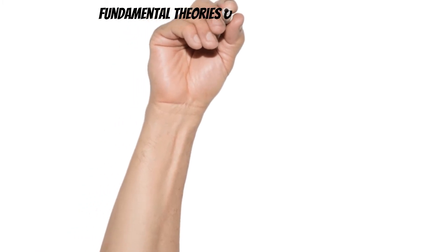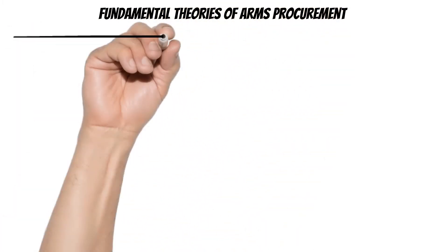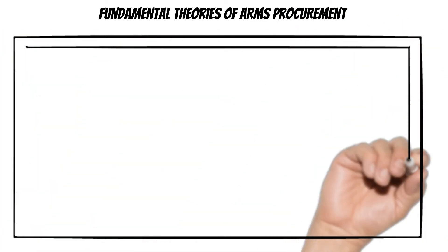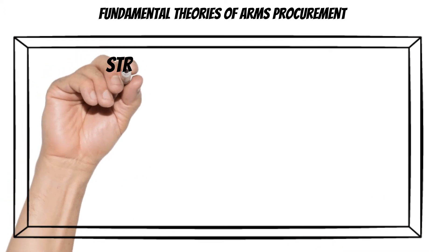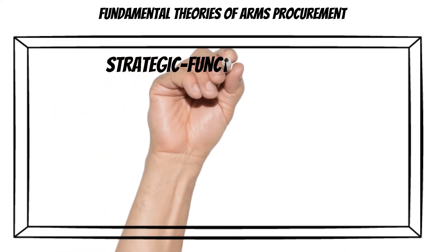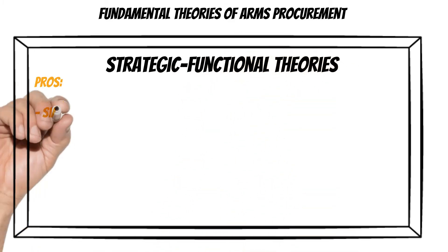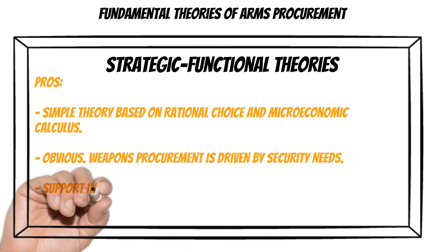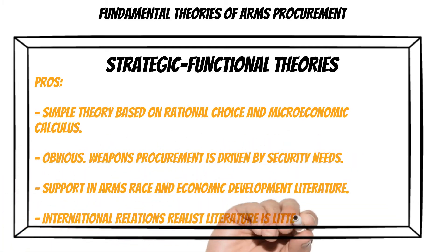The pros of this theory are that it's probably the most common theory out there, and there's a reason for that — it's pretty simple. The explanation is intuitive: only purchase arms if you face a threat, and only buy arms within your budget. It's based on rational choice and microeconomic calculus. Weapons procurement being driven by security needs just seems obvious. International relations literature, especially on arms race behavior, is littered with the strategic functional approach to explain arms procurement behavior.